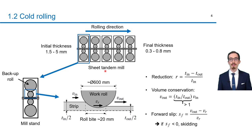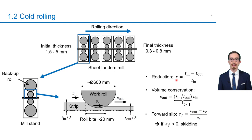Strips are cold-rolled in primary tandem mills, which can be followed by secondary mills. A sheet tandem mill progressively reduces the thickness from several millimeters to several tens of a millimeter. Such a mill is made up of 4-6 mill stands, which usually consist of two backup rolls and two work rolls. The work rolls reduce the thickness of the strip by entraining it between them through their rotation and friction. The contact region between the rolls and the strip is called the roll bite.